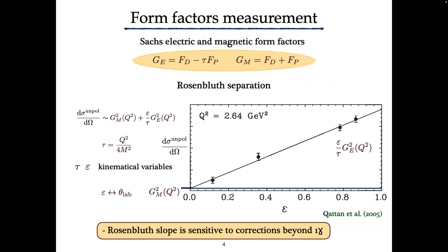The cross-section is given by a sum of the magnetic form factor squared and electric form factor squared, with a kinematic prefactor between them. Tau is related to the momentum transfer, and epsilon is a parameter related to the scattering angle — for forward scattering epsilon goes to one, and for backward scattering epsilon goes to zero. If we plot the cross-section as a function of epsilon at fixed momentum transfer, from the slope we determine the electric form factor and from the offset the magnetic form factor. At small momentum transfer, the electric form factor dominates and the proton charge radius is extracted mainly from the electric form factor.